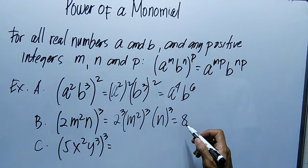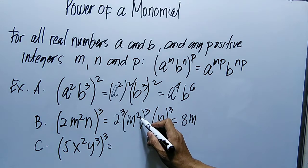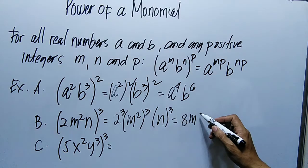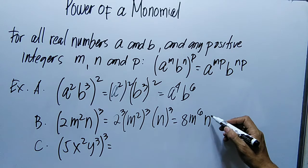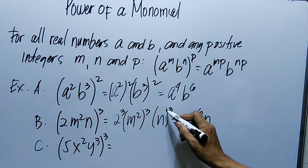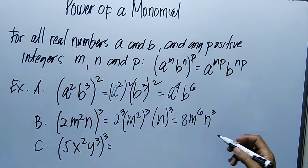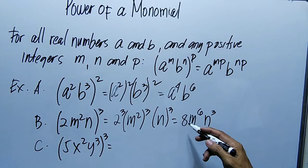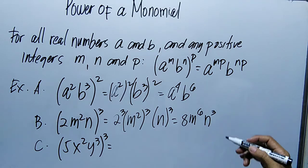Then si M, yung exponent niya is 2. So multiply natin kay 3, magiging 6. Then N, walang exponent dito, meron niyang 1. Multiply natin kay 3, so magiging 3 or cube. So yung final answer natin, 8M to the 6 power N cube.